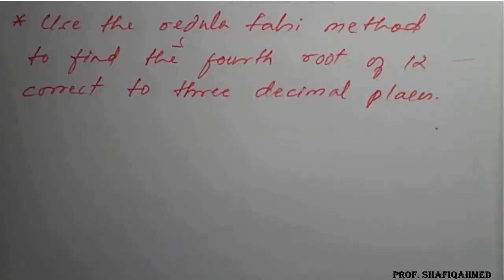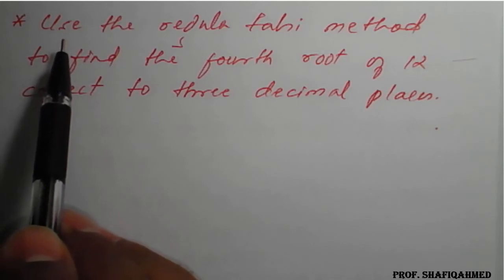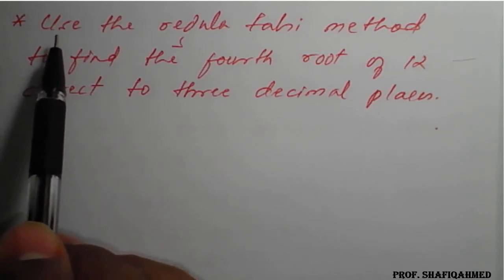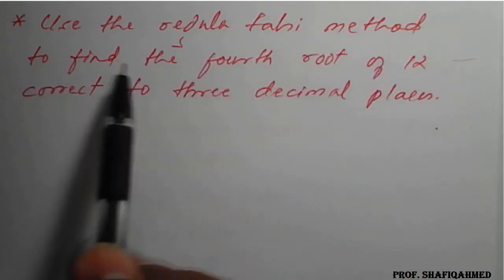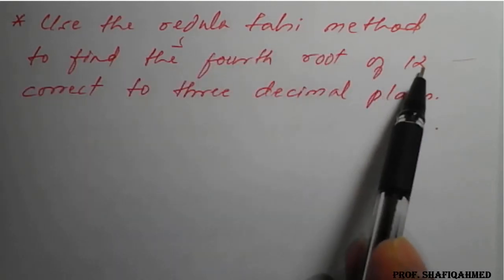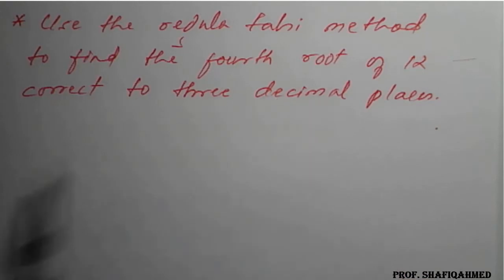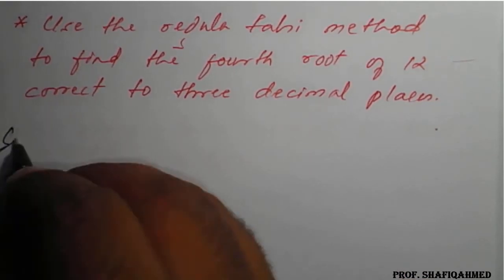Hello students. In this lecture we will see a problem based on the Regula Falsi method. The problem is: use the Regula Falsi method to find the fourth root of 12, correct to 3 decimal places. Solution.